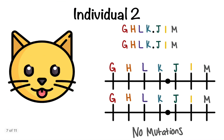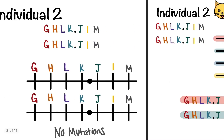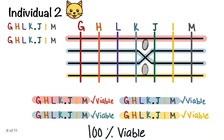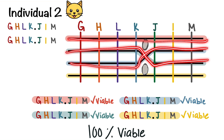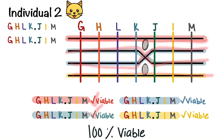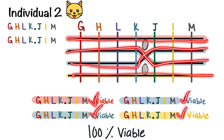Now let's look at individual two. Individual two has two of the same chromosomes. Therefore, we don't need an inversion loop, and they have no mutations. Although they still cross over between K and J, if we follow each one, we can tell that they all have the same chromosome at the end, and they're all going to be viable.